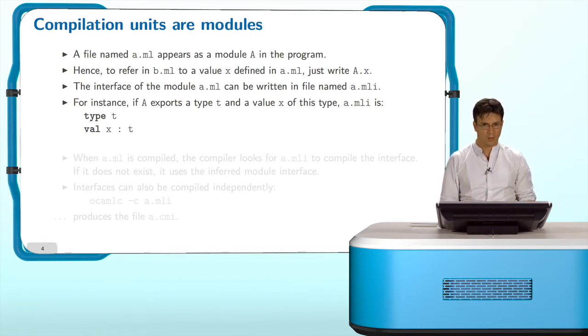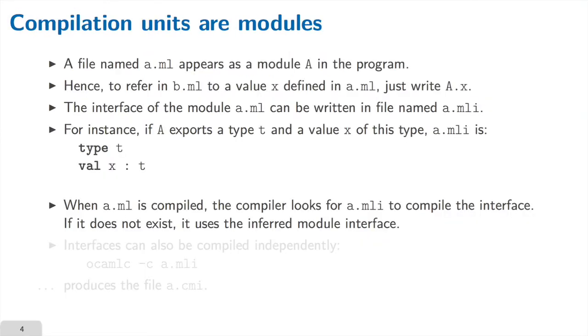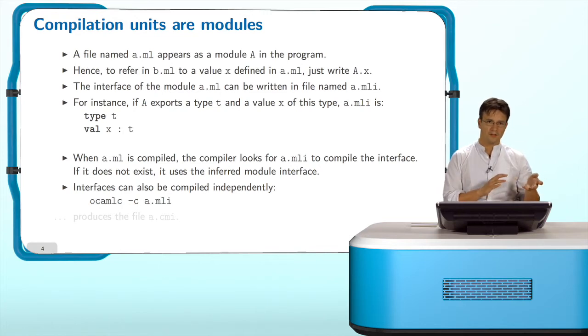The content of a.mli is basically what you would have written between sig and end when you define the signature. So you will write declarations only in that kind of file. When a.ml is compiled, the compiler looks for an interface. If the programmer wrote an interface, it will use it. If there is no such file, it will use the inferred module interface. If you want to compile interfaces separately, you can do it. Just provide an a.mli file to the compiler, it will detect that it is an interface and produce a .cmi file.